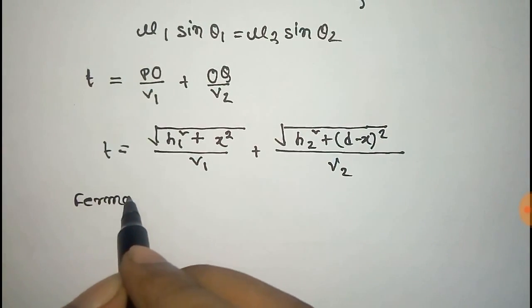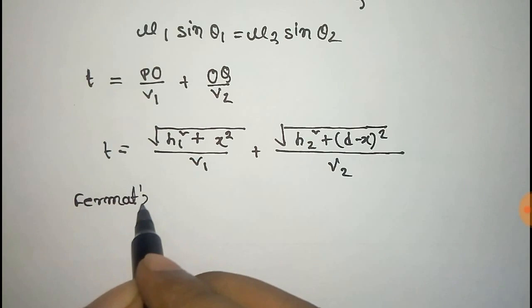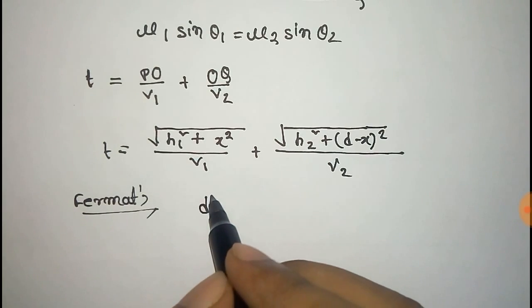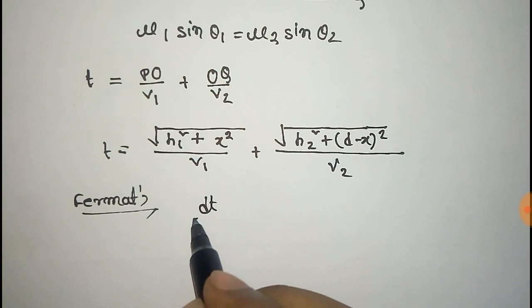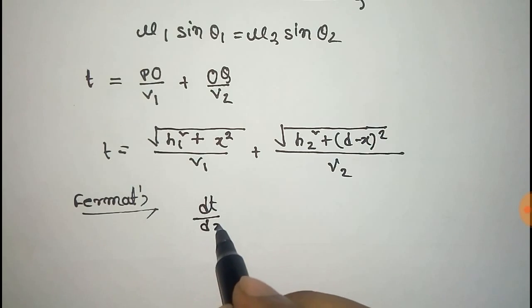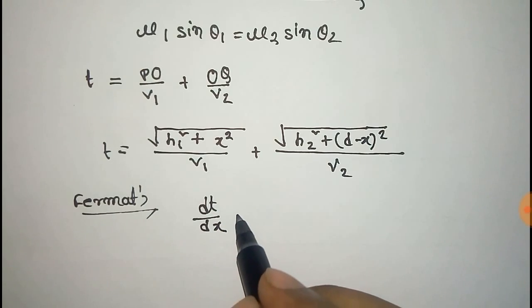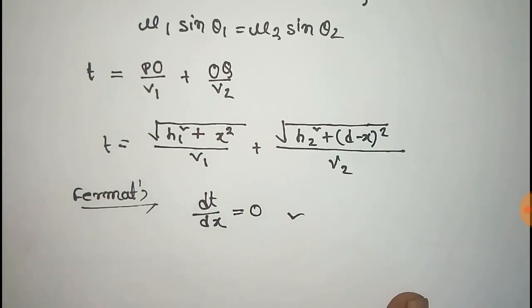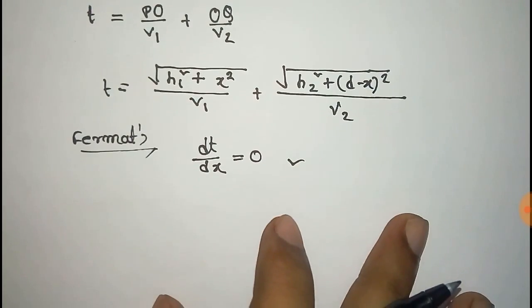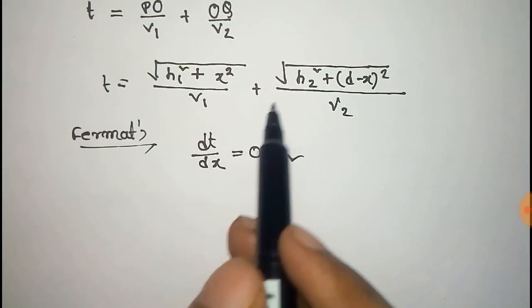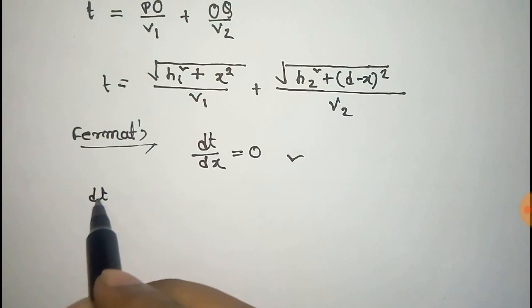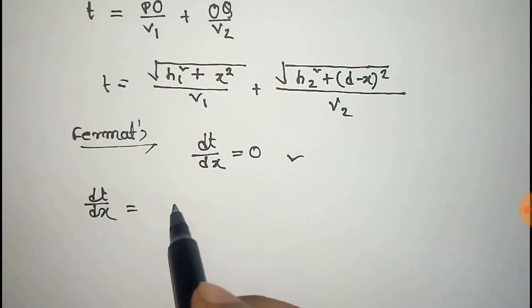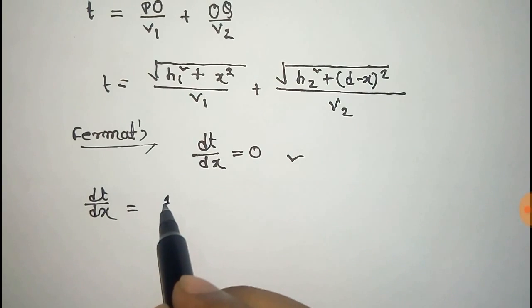Now from Fermat's principle we know the total time will be maximum or minimum to go from source to the ultimate point. So the derivative of T with respect to X will be zero. We have to take the derivative of T with respect to X, where 1 by V1 is constant.